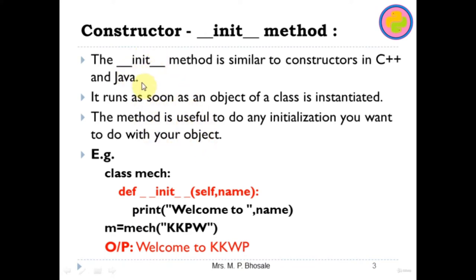This is a special method as it is the constructor. For example, we have a Make class and the __init__ method takes self and a name parameter. Inside, we print 'welcome to' and the parameter name. As soon as we create this object M of class Make and pass 'KKWP', automatically the constructor is called with the parameter 'KKWP', and the message 'welcome to KKWP' is printed.